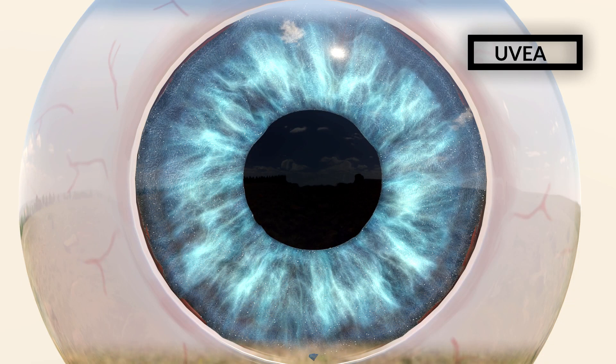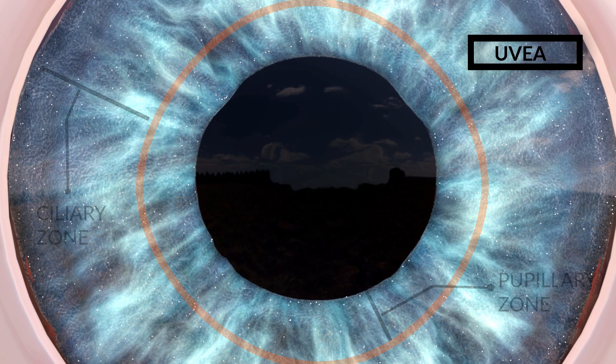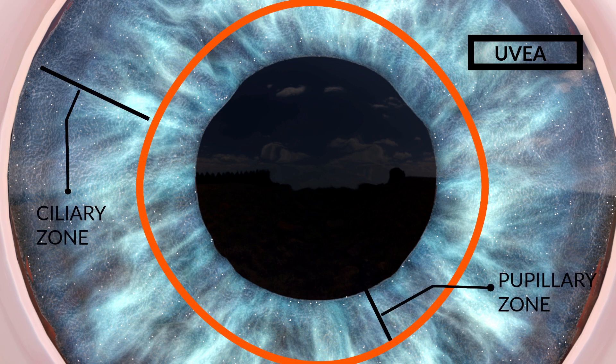As we move anteriorly, we see the anteriormost part of the uvea known as the iris. This structure is responsible for the color of the eye; the name iris is derived from the Greek goddess of the rainbow. It is basically a diaphragm-like structure with a central opening called the pupil. The pupil size varies based on the amount of light and various other factors, and it regulates the amount of light entering the eye. The ciliary zone has various depressions known as crypts, while the pupillary zone is relatively smoother.